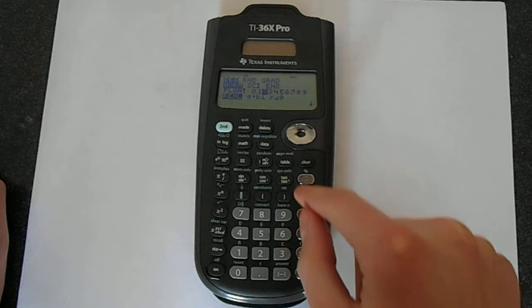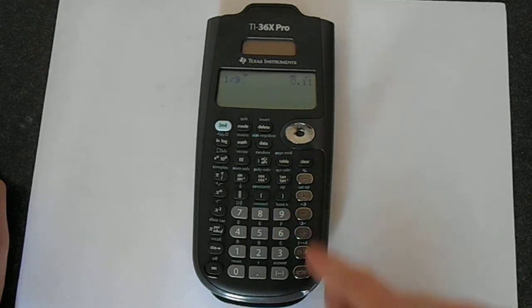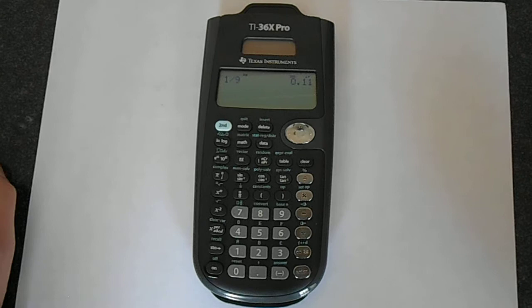2, and then you do 1 divided by 9, you only get two decimal places.